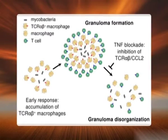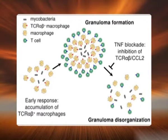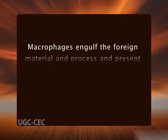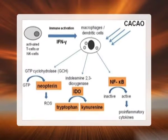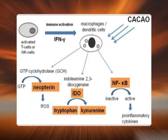Second, immune granulomas: these are caused by insoluble particles — typically microbes — that are capable of inducing a cell-mediated immune response. This type of immune response does not necessarily produce granulomas, but does so when the inciting agent is poorly degradable or particulate. In these responses, macrophages engulf the foreign material and present it to appropriate T-lymphocytes, causing them to become activated. The responding T cells produce cytokines, including interferon-gamma, which activates macrophages and transforms them into epithelioid cells and multinucleated giant cells.